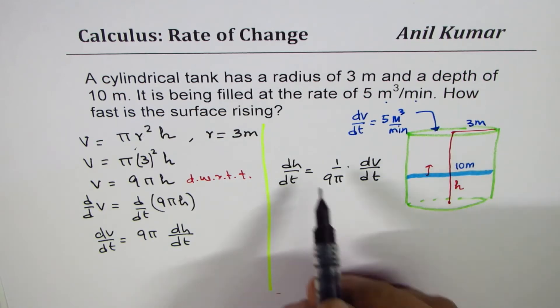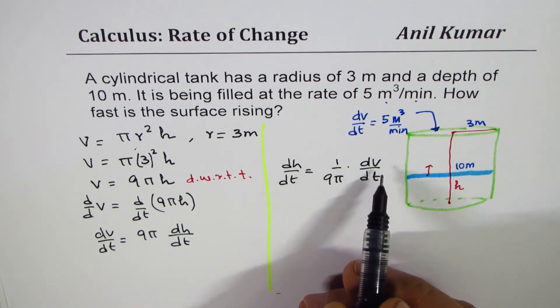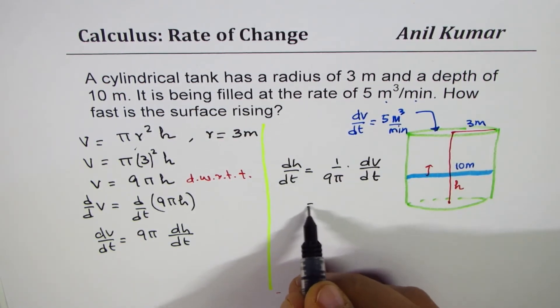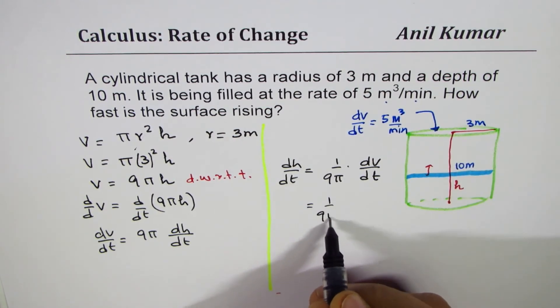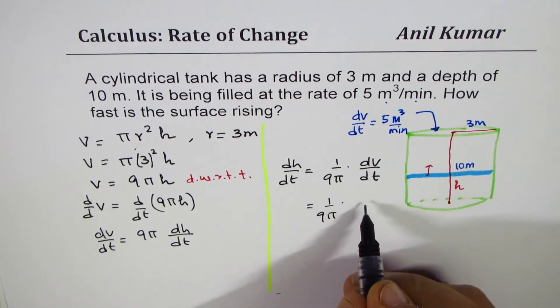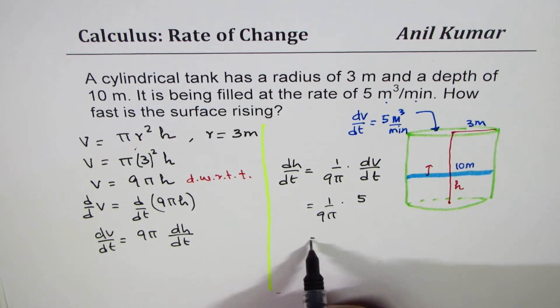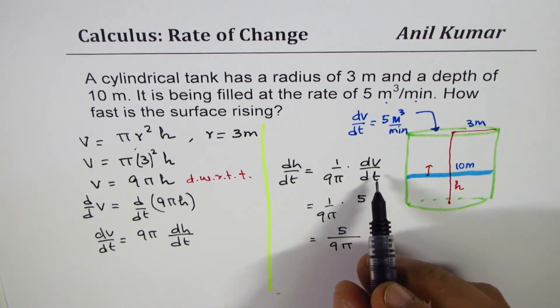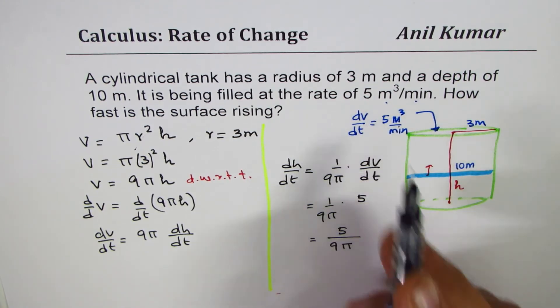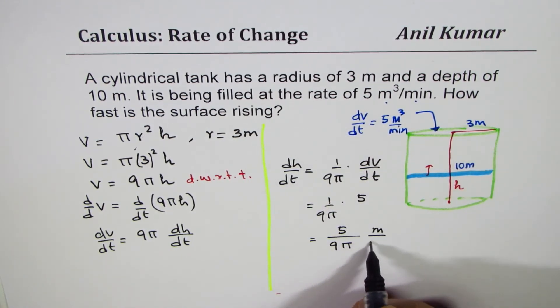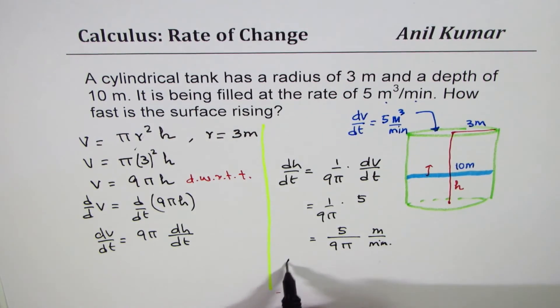So that becomes the formula. dV/dt is known to us, which is 5, so we can substitute that. So we have 9π in the denominator times 5. So the answer is 5 over 9π, and the units will be meters per minute.